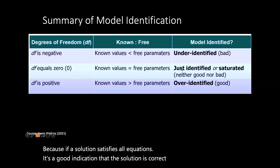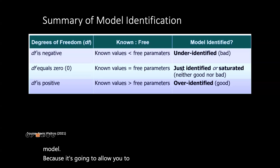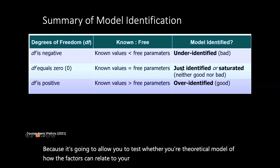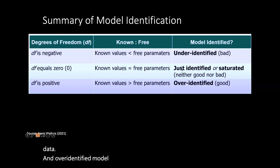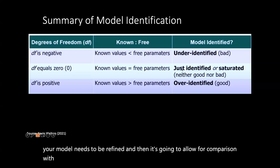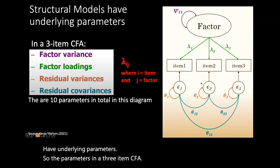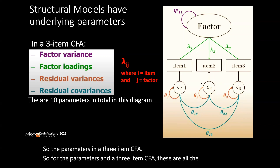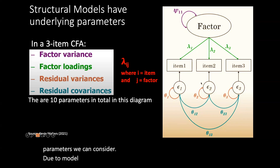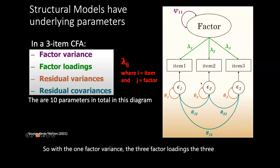If an over-identified model fits well, it increases confidence that the model represents the structure of the data — analogous to having more equations than unknowns in algebra. In CFA, we're always aiming for an over-identified model because it allows us to test whether our theoretical model of how the factors relate to our indicators is a good fit to the observed data. Structural equation models have underlying parameters. For the parameters in a three-item CFA: factor variance is shown in purple, factor loadings in green, and residual variances in orange. With one factor variance, three factor loadings, three residual variances, and three residual covariances, we get ten parameters in total.